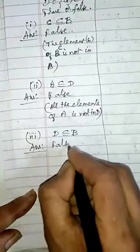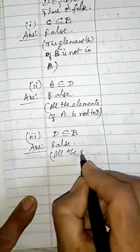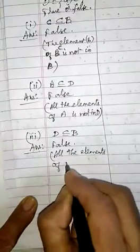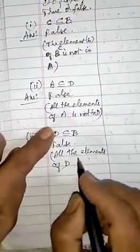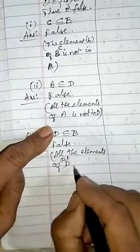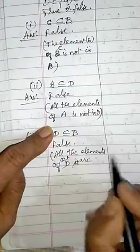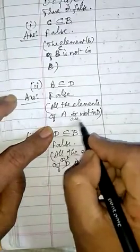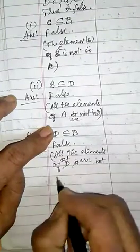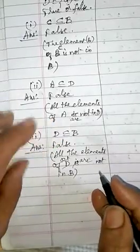So it is false. Write the answer as false. For the reason, write: all the elements of set D are not in set B. Is that clear, children?